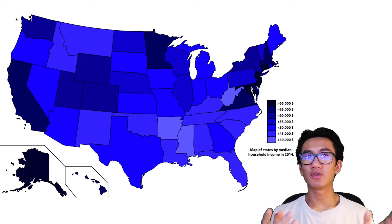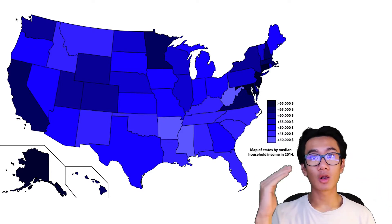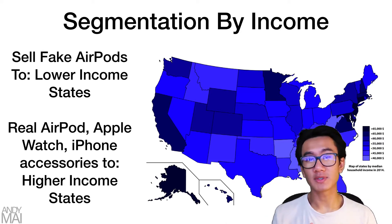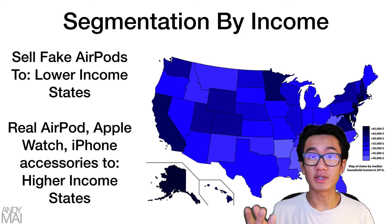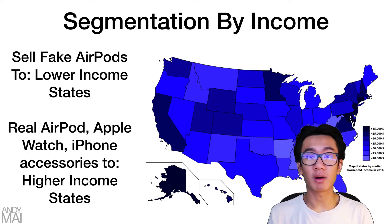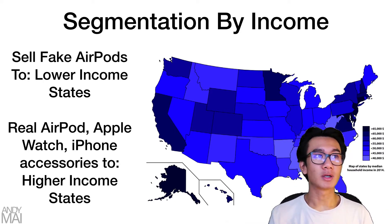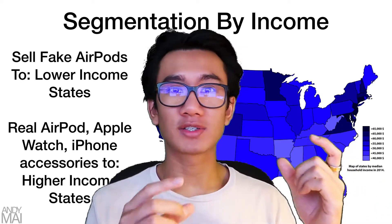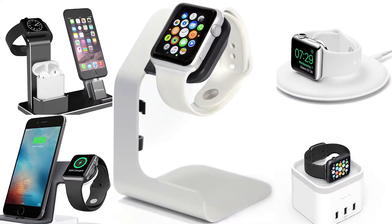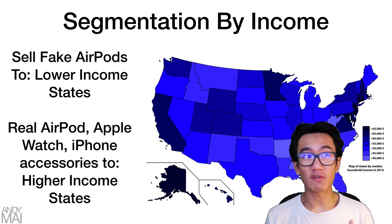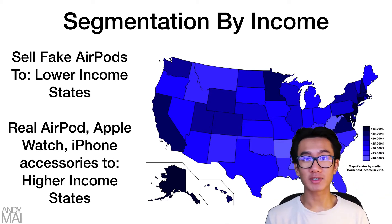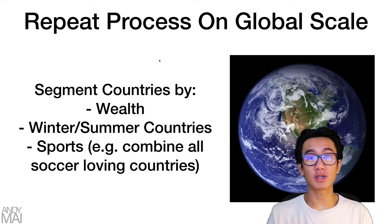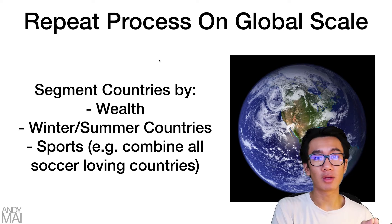Another option is segmentation by income. As you can see in this graph, you can identify the highest and lowest income states. For example, you could sell fake AirPods to lower income states since they'd want AirPods at a cheaper price — say $20 or $30 — whereas you could sell real AirPods, Apple Watch accessories, or charging docks to high income states where those ads will perform very well.